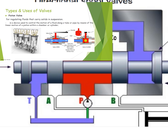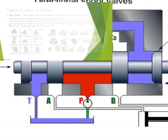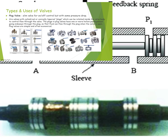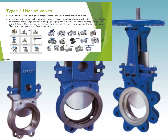A plug valve is a simple valve for on-and-off control but with some pressure drop. These are valves with cylindrical or conical tapered plugs which can be rotated inside the valve body to control the flow through the valve. The plugs in plug valves have one or more hollow passageways going sideways through the plug so that fluid can flow through the plug when the valve is open. Plug valves are simple and economical.